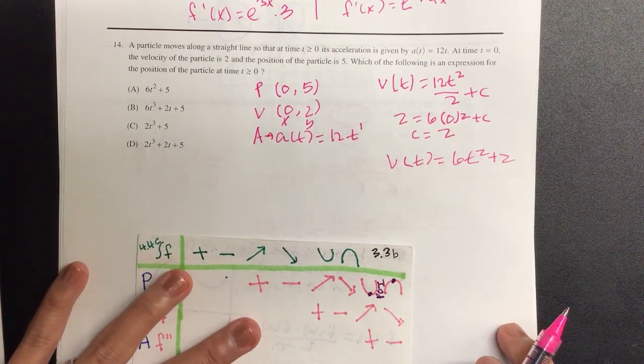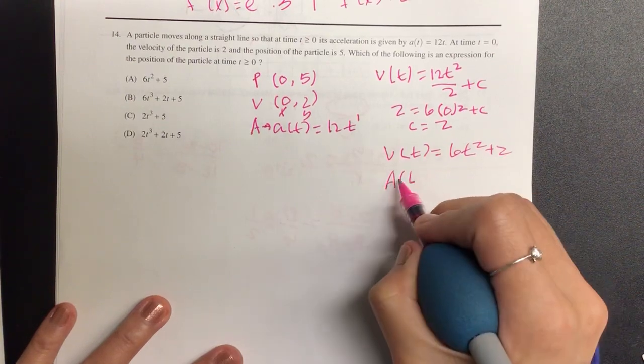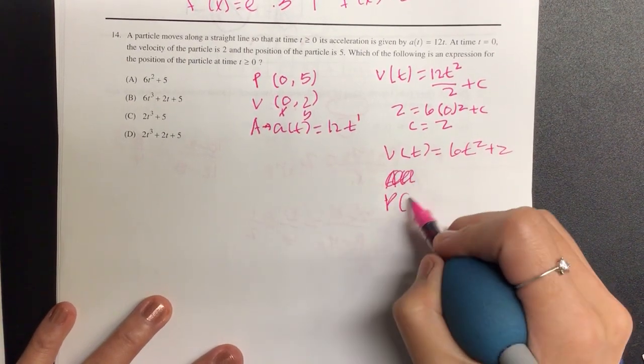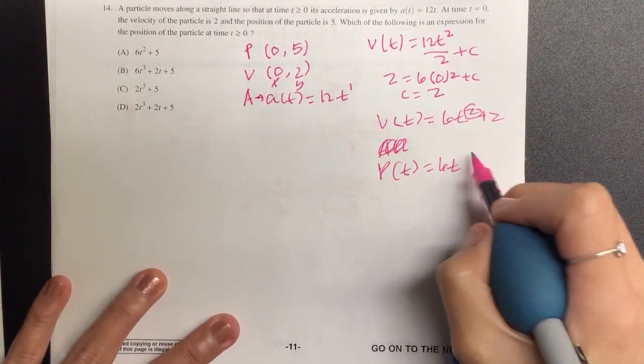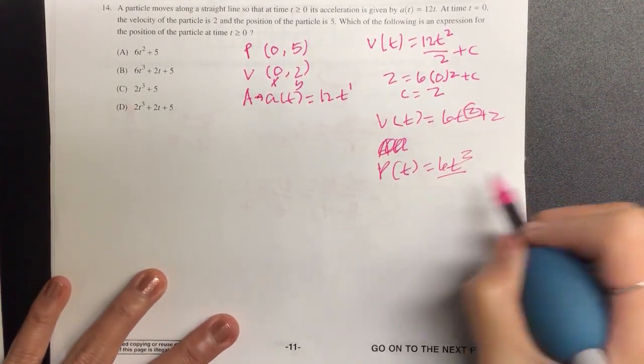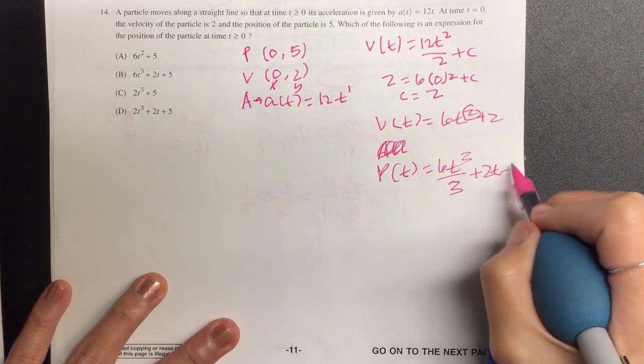And we're almost there to the particle. Let's go ahead and anti-derive again. For the acceleration, or not acceleration, for the particle, what is one more of this power? Three. Divided by three plus two t plus c.